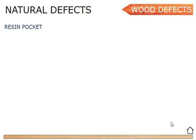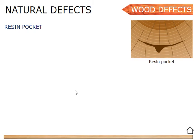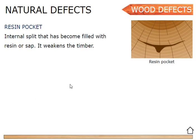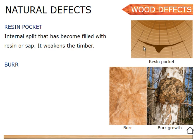These are all natural defects. The next one we're going to look at is a resin pocket. Resin is the yellow sticky sap that comes out of trees, especially softwood trees — trees that have needles on them. A resin pocket is literally a pocket full of this resin. It consists of internal splits inside the trunk that become filled with resin or sap, which makes the timber a lot weaker.